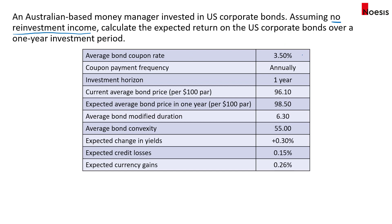So we have a 3.5% bond coupon rate with annual payments over a one-year investment horizon. The current average bond price is 96.1 for a $100 par. And in one year, the bond price is expected to be 98.5 given that there's no change in the yield curve.